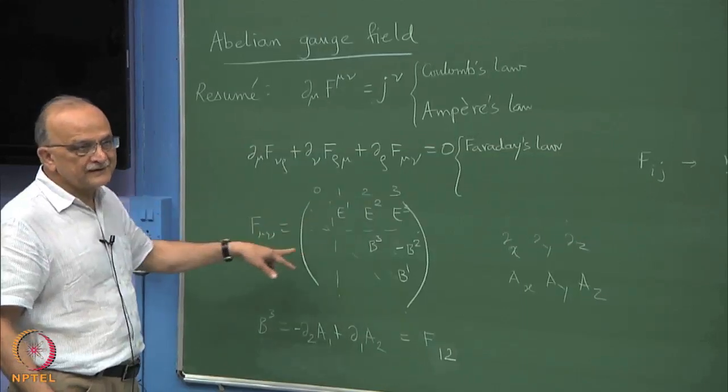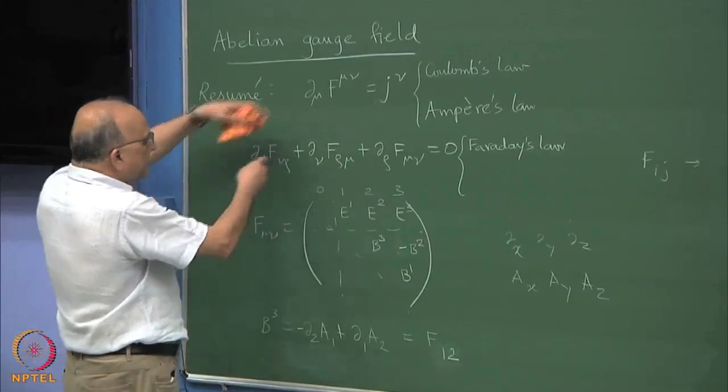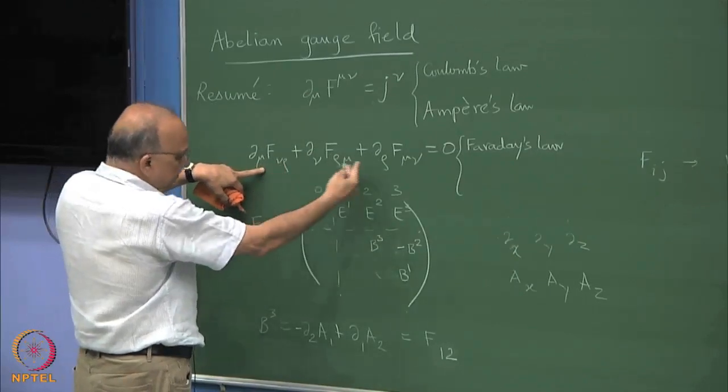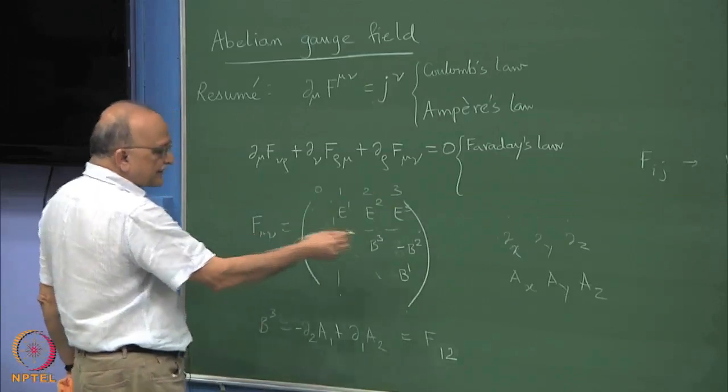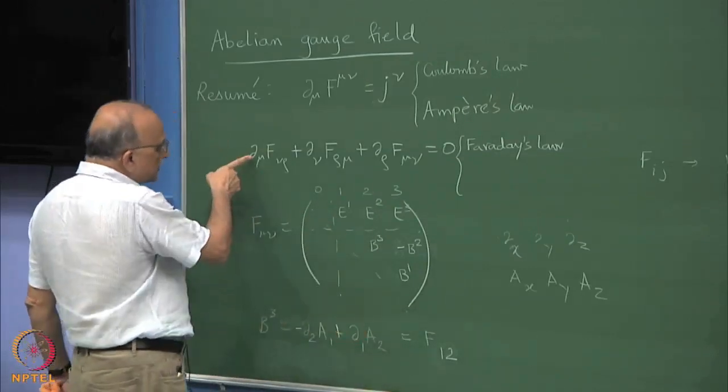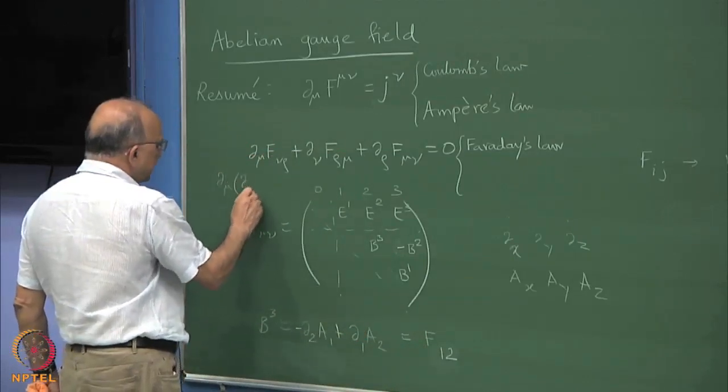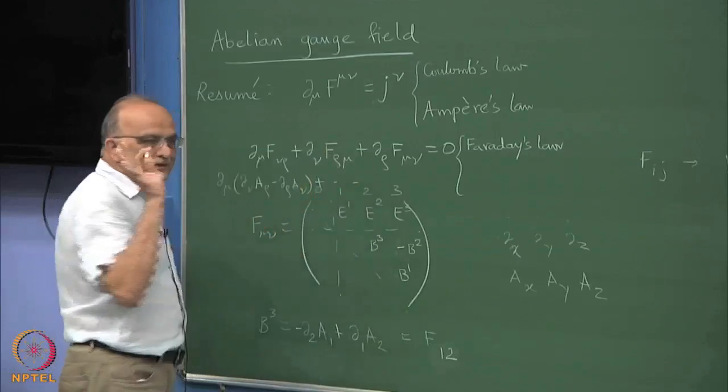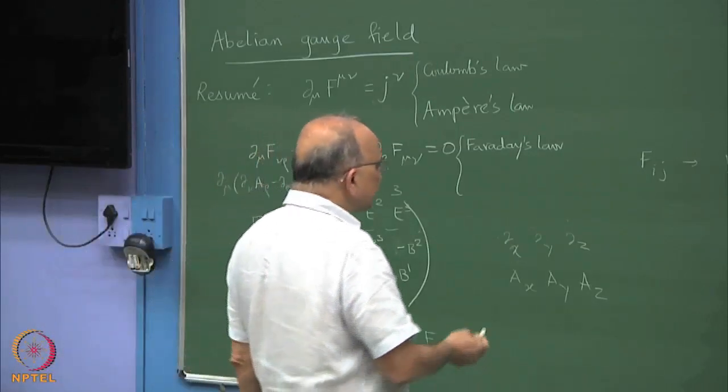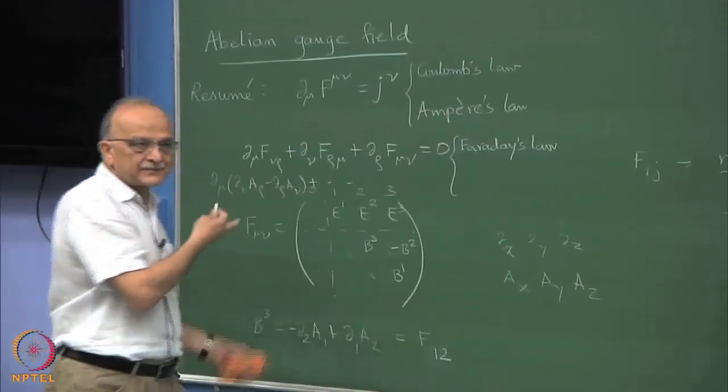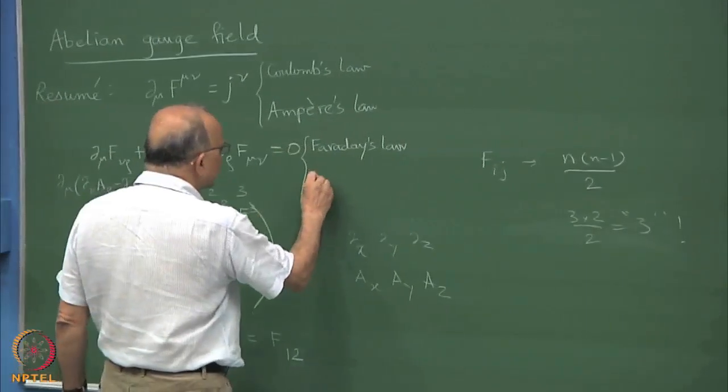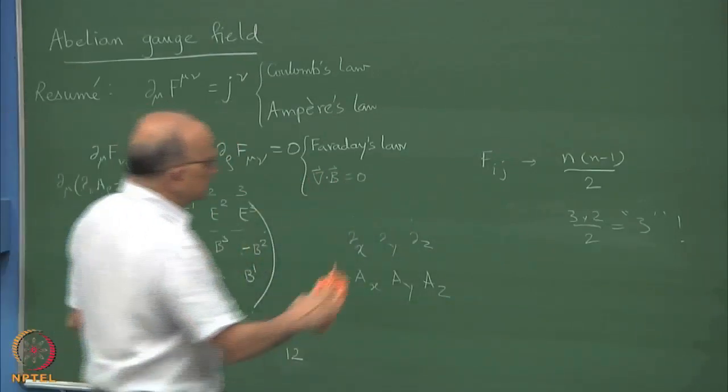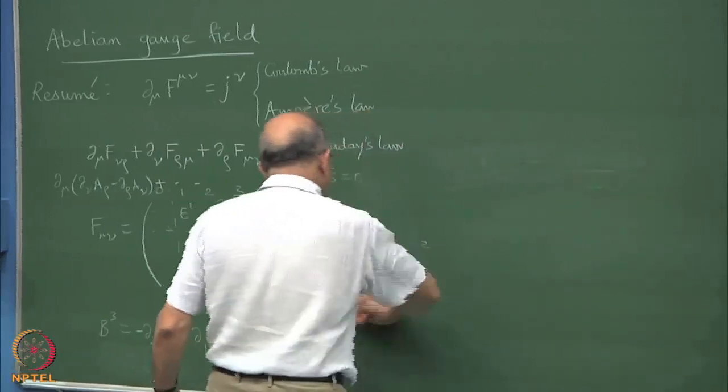If F_mu_nu is antisymmetric, it's easy to check that all terms will add to zero. It's an identity. So the great Faraday's law is essentially an identity, and the other law - divergence B equals zero - these are automatic identities that follow from F_mu_nu being antisymmetric.